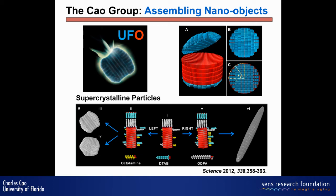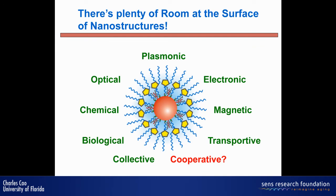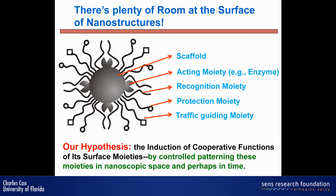Now I'll go back to what we're mainly talking about today. Another major part of my research is dealing with surface particles — many properties can be controlled by the surface. The question is: how can we create cooperativity between the ligands? We have a particle and we can put as many ligands as we want. Our major hypothesis is that by controlling the patterning of these components in precise space — or perhaps in time — cooperativity can be created.